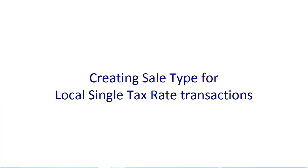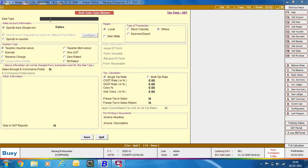Here, we will discuss about creating Sale Type for Local Single Tax Rate Transactions. Local Transaction means within-state transactions, and Single Tax Rate Transaction means only a single tax rate would be used — that is, all items in the voucher are taxable at a single rate. We are specifying the name as LGST12%.